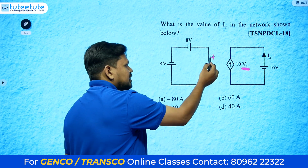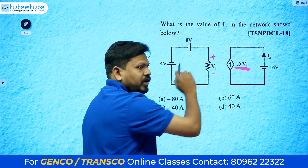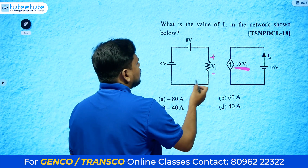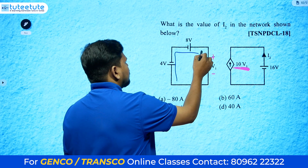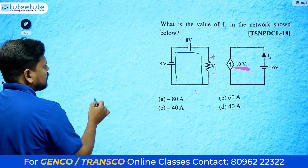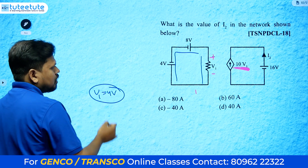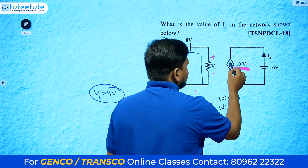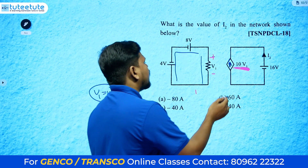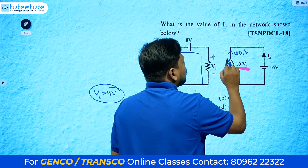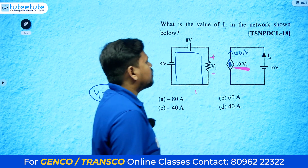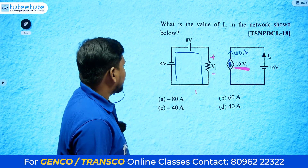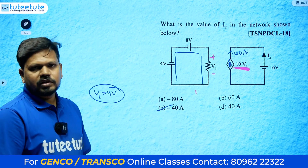V1 is found from the left network: plus 4 minus 8 plus v1 = 0, so v1 equals 4 volts. The dependent current source value is 10*v1 = 10*4 = 40 amperes. Since i2 flows in the opposite direction, i2 equals minus 40 amperes. Option C is the correct answer.